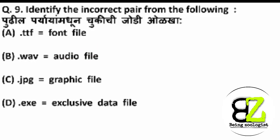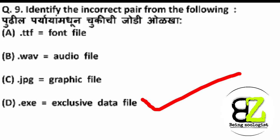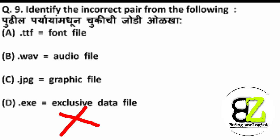Moving on to the next question: 'Identify the incorrect pair from the following.' Here are your four options. The answer is option D — it is the wrong or incorrect pair, because .exe is used for an 'executive' data file, not an 'exclusive' data file. So that pair is wrong, and the other pairs are correct.